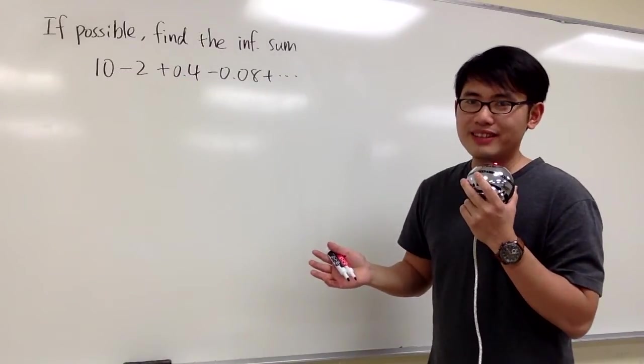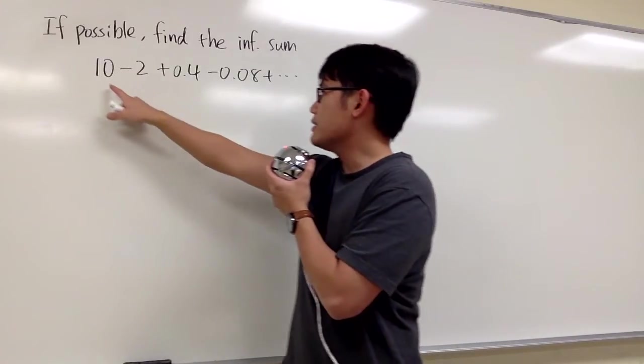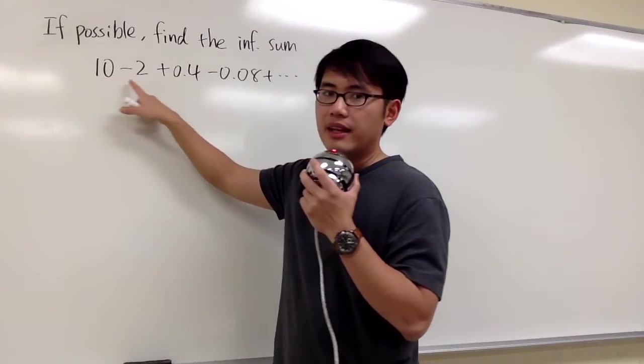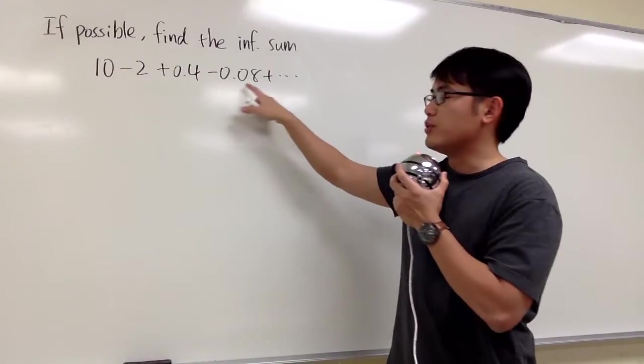The first question that we have to answer is, what kind of series is this? We have to look for the pattern. Let's look at the first number, which is 10, and the next one is negative 2, then 0.4, then negative 0.08.